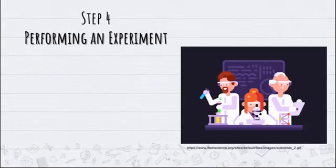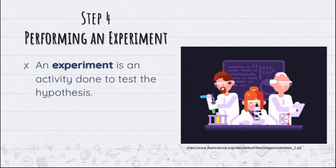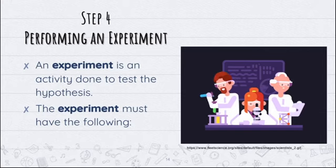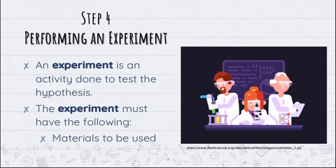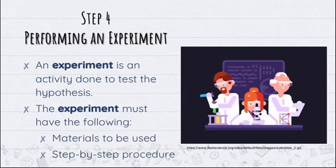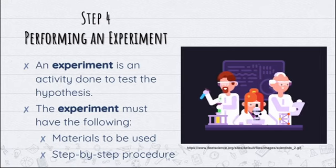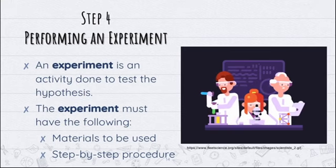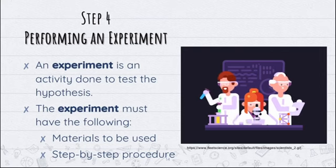After formulating a hypothesis, we are now going to perform our experiment. What is an experiment? An experiment is an activity done to test the hypothesis. Whenever you conduct an experiment, you should consider the following: first, the materials to be used, and then a step-by-step procedure. Make sure you have your materials prepared as well as the step-by-step procedure to guide you. You are not going to think of your own procedure — you need to search for it.